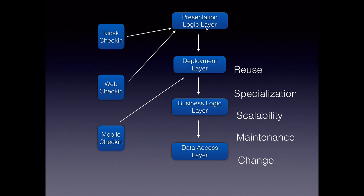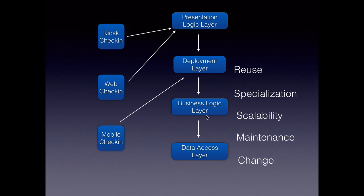Our Java EE application is divided into a presentation layer which paints the UI, the deployment layer which could be web services or JMS using which we are going to expose our application logic to other applications or layers, the business logic layer where the intelligence of our application goes, and finally the data access layer which is responsible for connecting to the database and doing all the CRUD work.